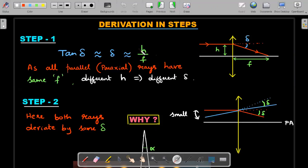So H is directly related to delta. F is same for all parallel rays. So remember this, we'll recall this later.